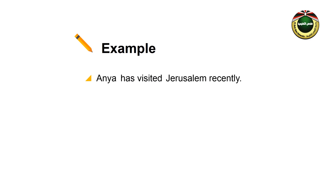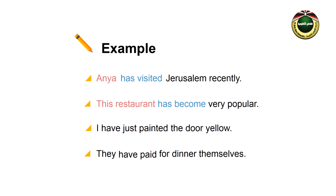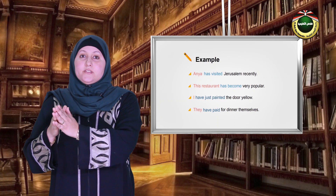Anya has visited Jerusalem recently. This restaurant has become very popular. I have just painted the door yellow. They have paid for dinner themselves. If you look at the above examples, you can find that has plus the past participle of the verb is used with singular subjects, which are Anya and this restaurant. And with plural subjects and the pronoun I, we use have plus the past participle of the verb.